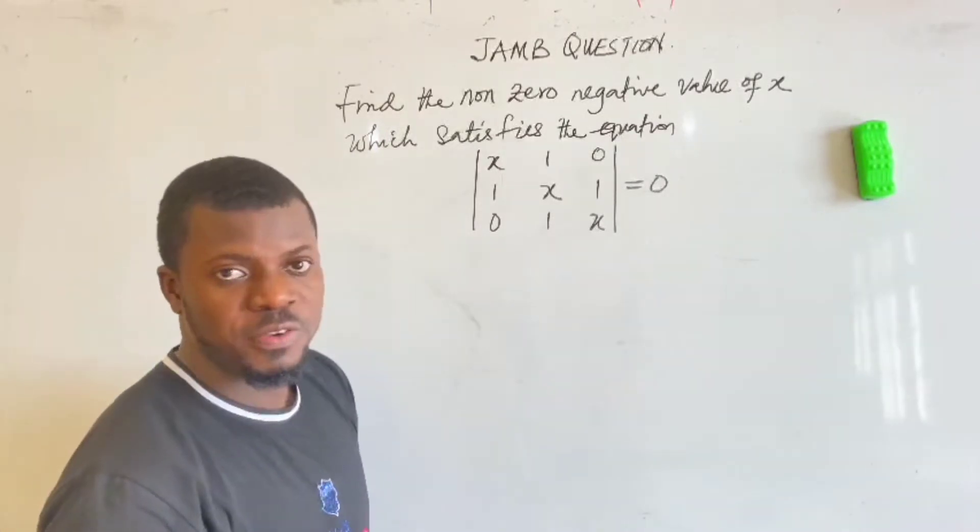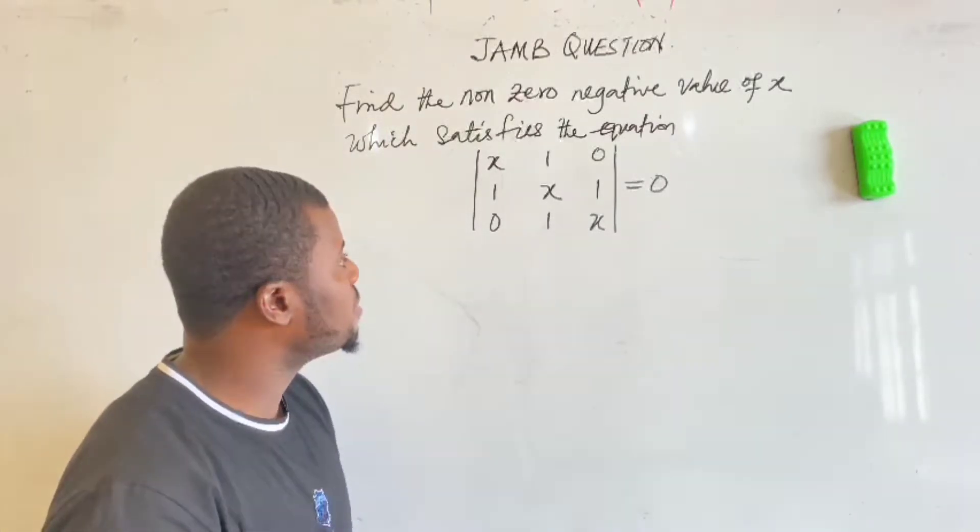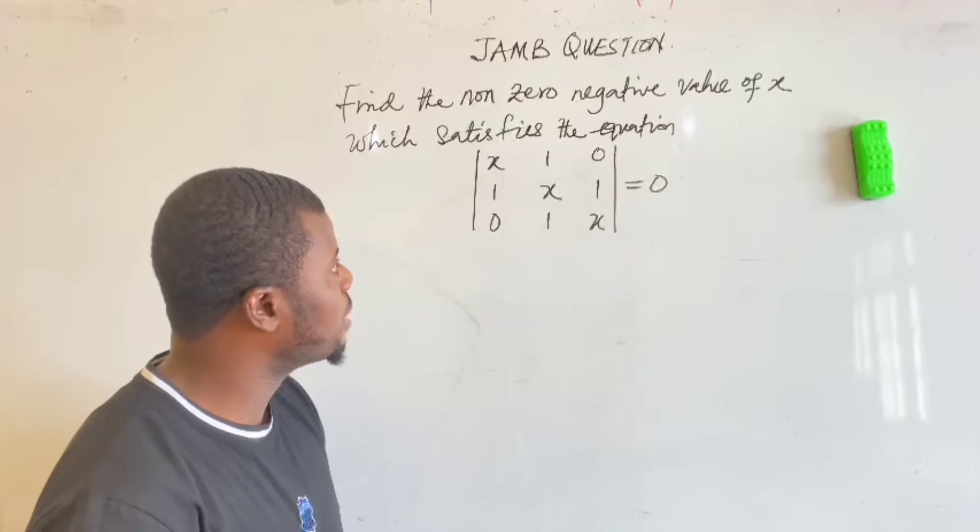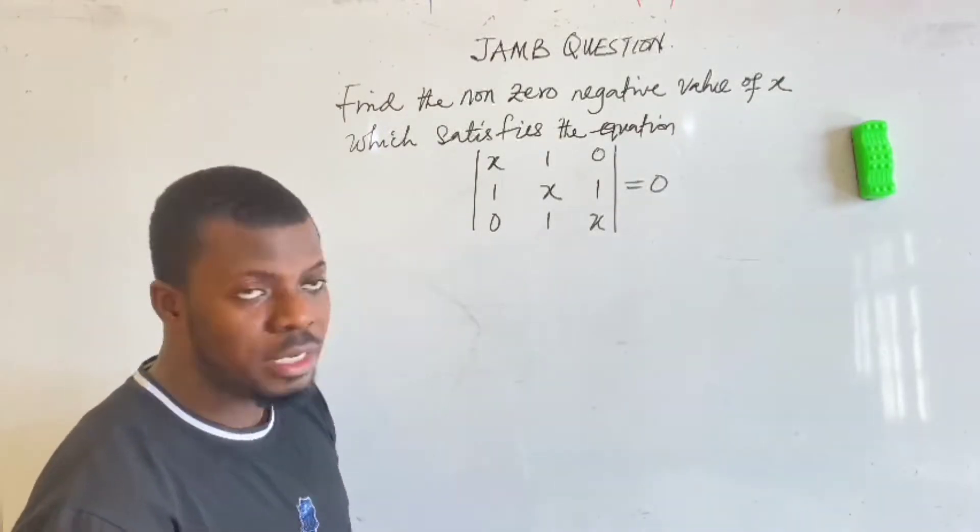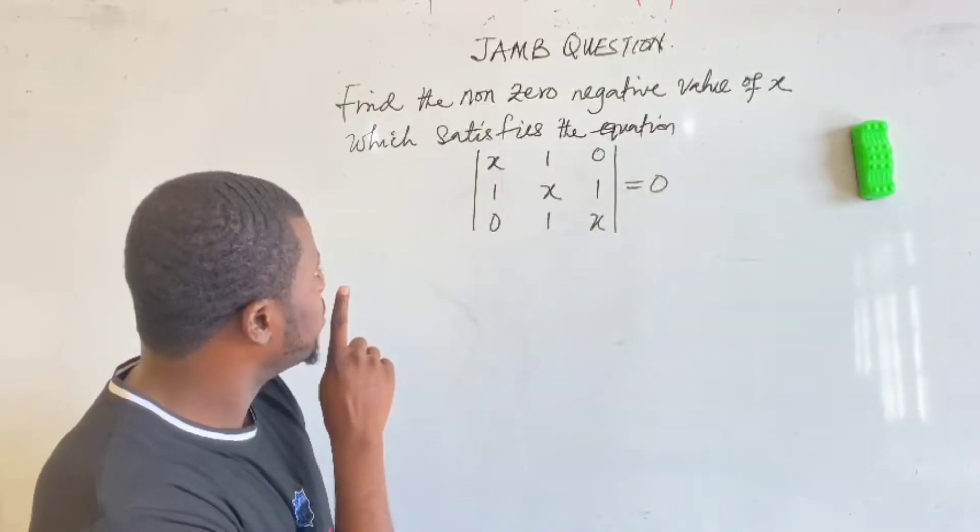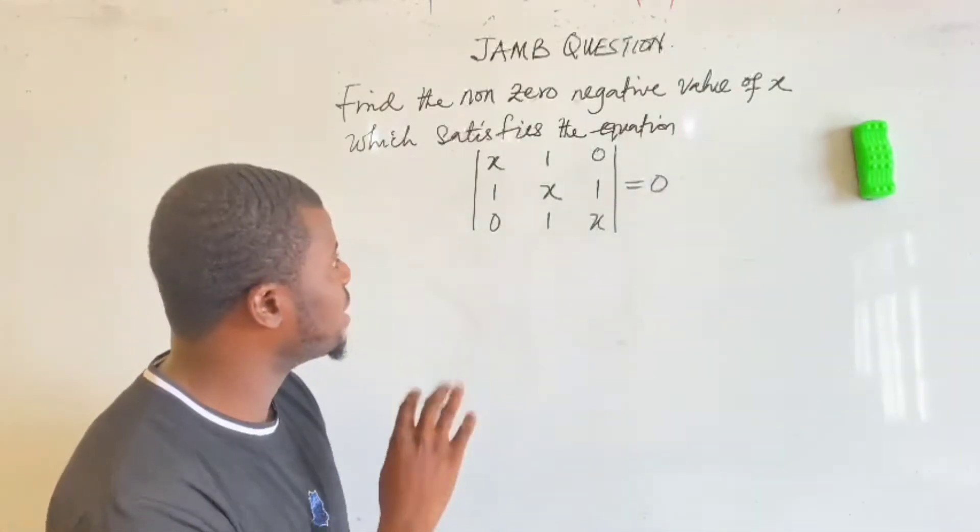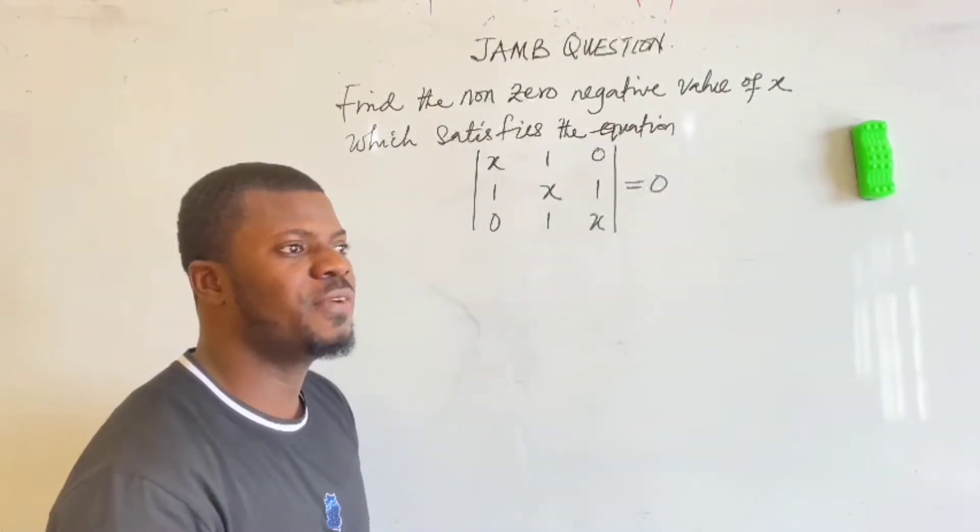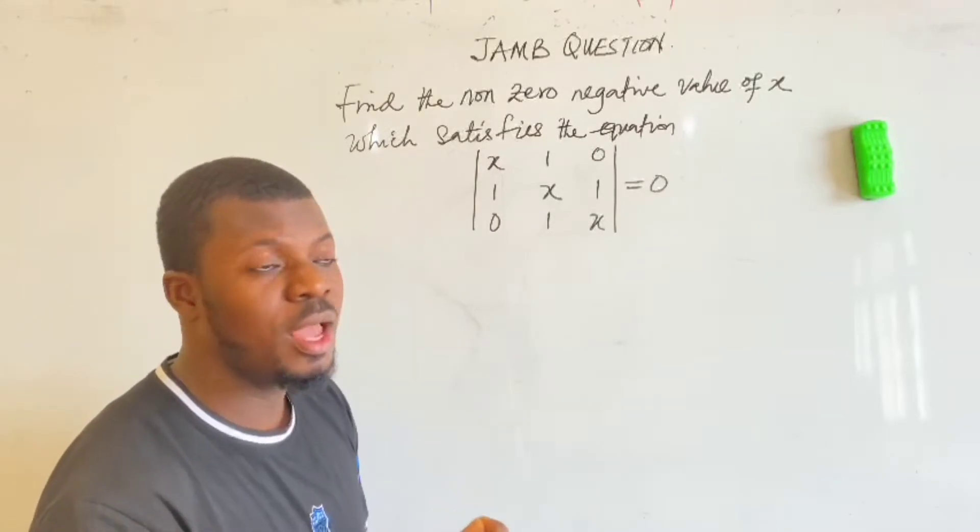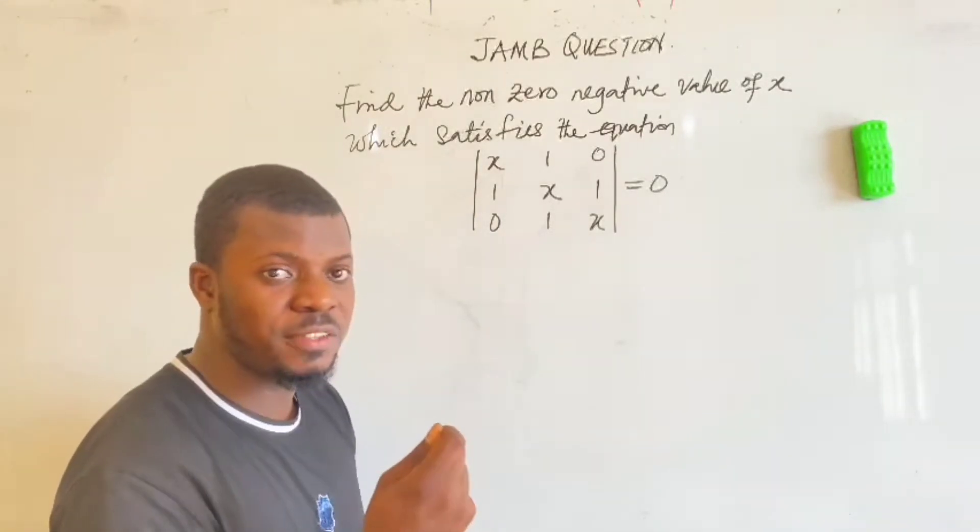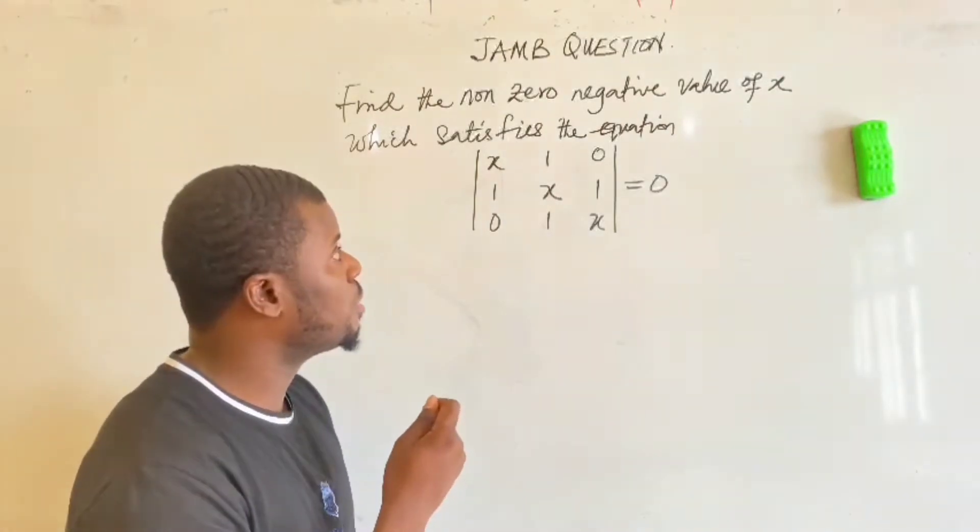Or we can call this a 3x3 matrix. And in the matrices we can use the method called the determinant. The determinant of the matrix. In other words, we get the values of x. And meanwhile we have an instruction there. You have to find non-zero negative value. What do we mean by non-zero negative value? It means the value of x we should have should not contain zero and should not contain negative value. We have a positive value as that value for x.